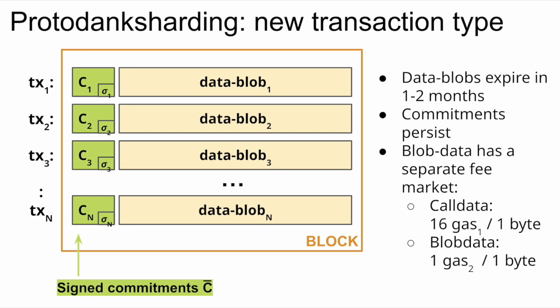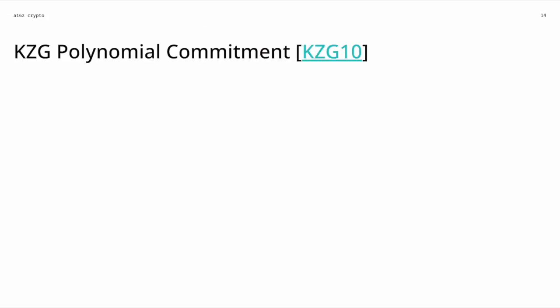Let me explain the commitment scheme proto-danksharding will use. A hash is a good commitment scheme — you can hash a data vector for a binding commitment — but we'll use something more clever called polynomial commitments, which give us additional properties. The commitment scheme is KZG polynomial commitment. If you haven't seen this before, I highly encourage you to look into the paper — it's very well-written, easy to follow, and the proofs are straightforward. It's a very elegant scheme.